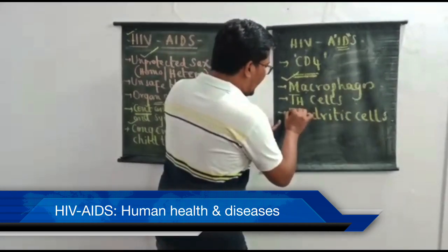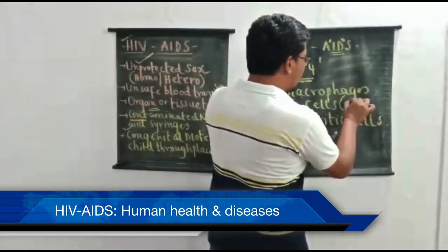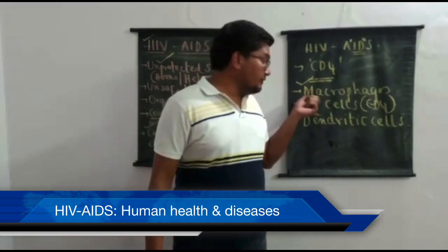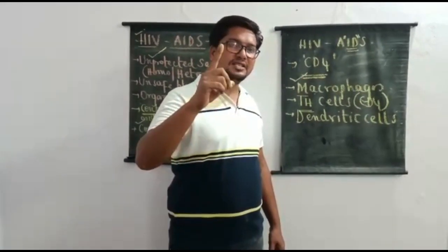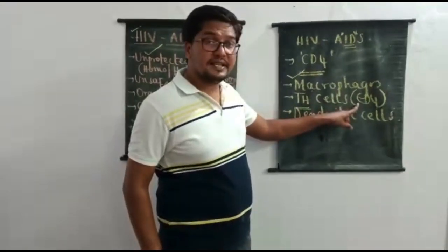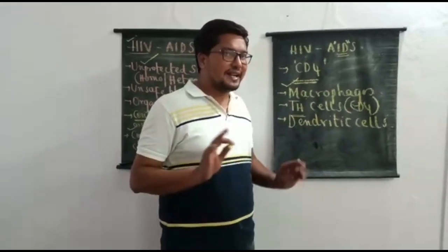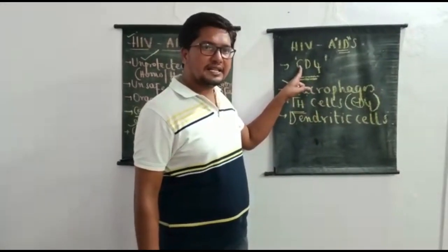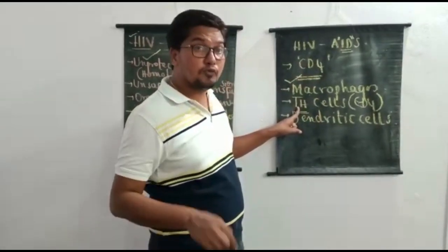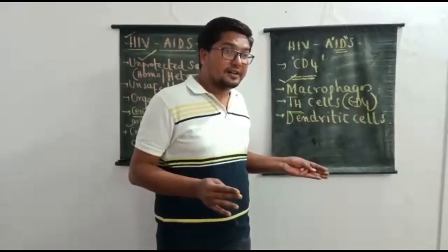T helper cells — the first type of T lymphocytes — are otherwise called CD4 cells. Out of the two important types of T lymphocytes, T helper cells (Th) have CD4 markers on their surface, while TC cells have CD8 markers. That is why HIV will never directly attack TC cells. The main target for HIV is T helper cells, because T helper cells are always provided with CD4 markers.